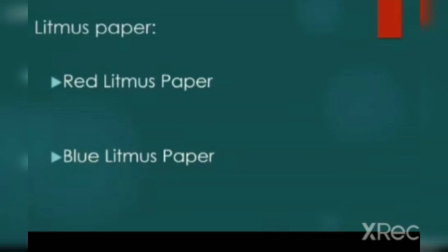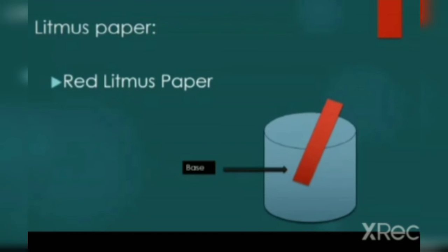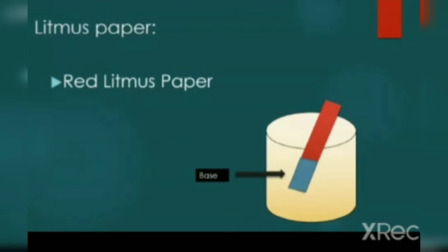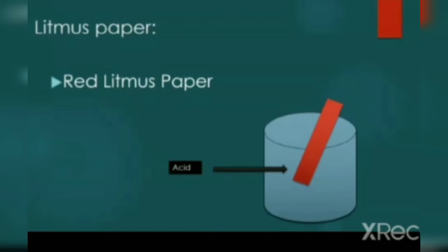Come to the litmus paper. Two litmus papers are there: red litmus paper and blue litmus paper. Look at the colors, red and blue. Dip in a solution. Red litmus paper - if solution is base, it will turn blue. So we say that bases turn red litmus paper to blue. If red litmus paper is dipped in acid solution, there will be no color change.